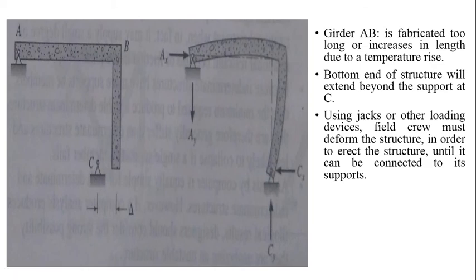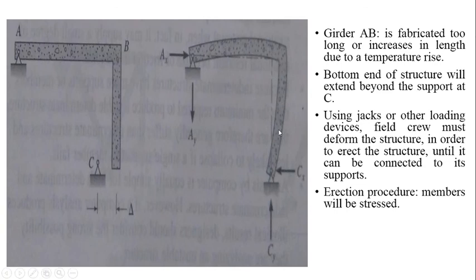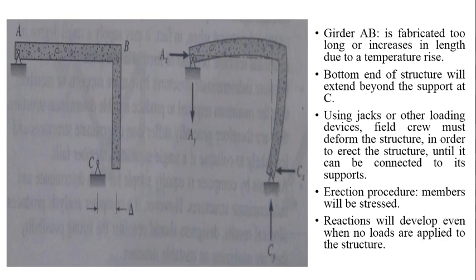Using jacks or other loading devices, the field crew, that is the people working on the field, must deform the structure in order to erect the structure until it can be connected to its support. Therefore, in the erection procedure, members will be stressed. That means when this member has to be connected at C, it has to be done using jacks or other loading devices. And while doing so, the members will get stressed. This AB and BC member will get stressed. It is interesting to see that reactions will develop even when no external loads are applied to the structure.